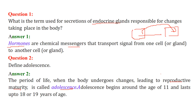Adolescence starts around age 11 — this is not very specific and depends on person to person — and it lasts up to 18 to 19 years of age.